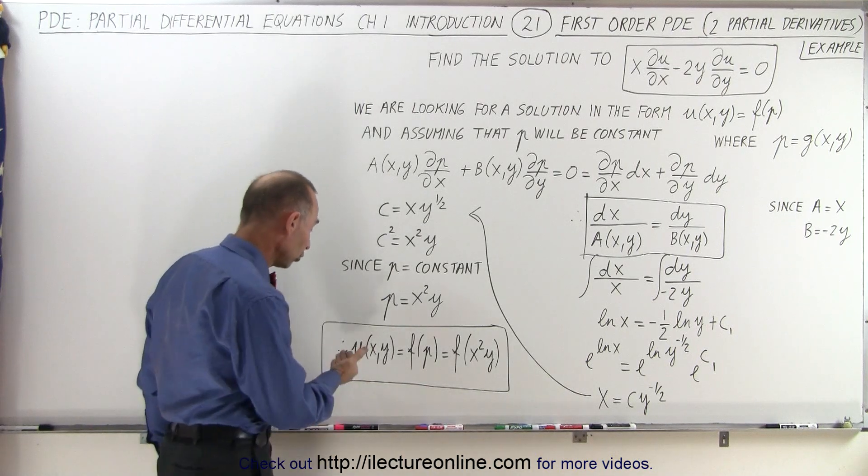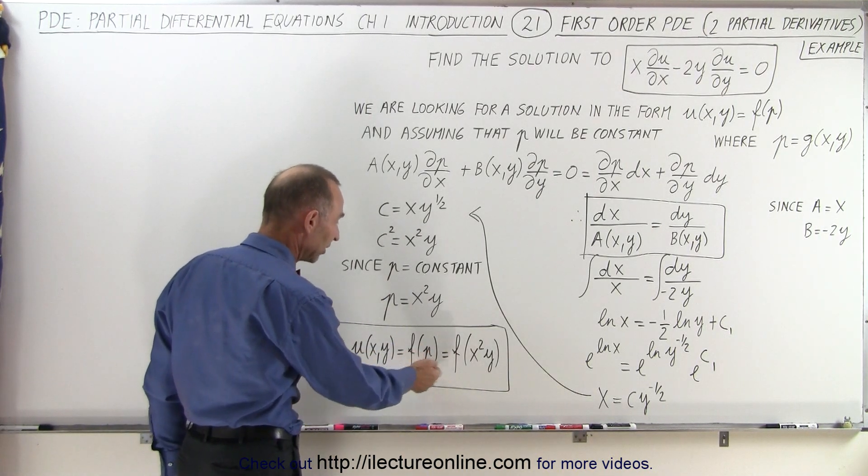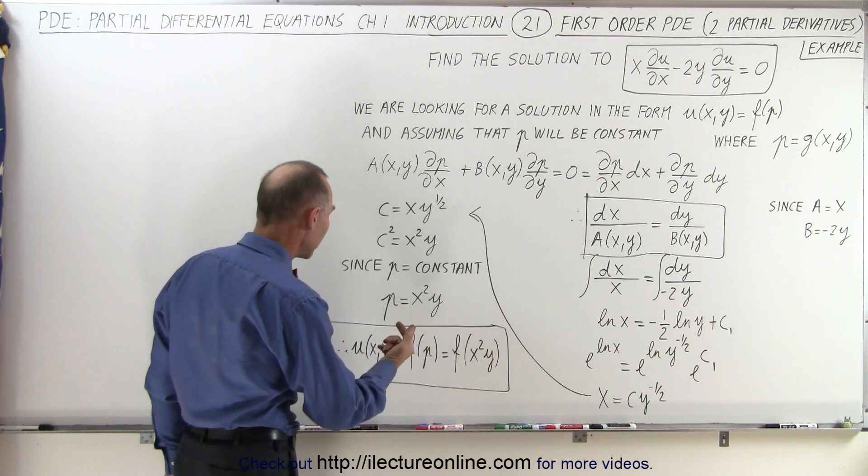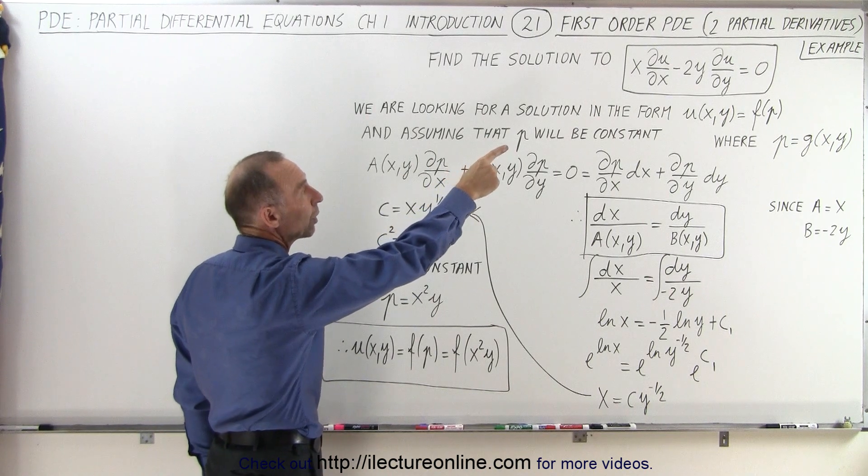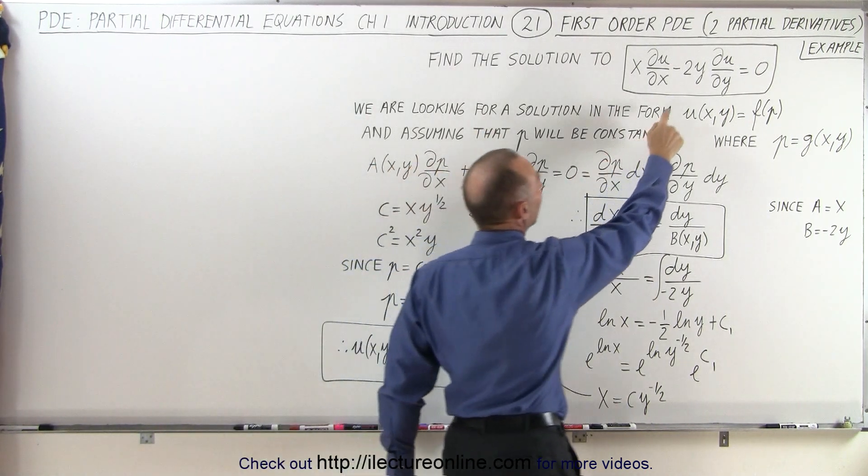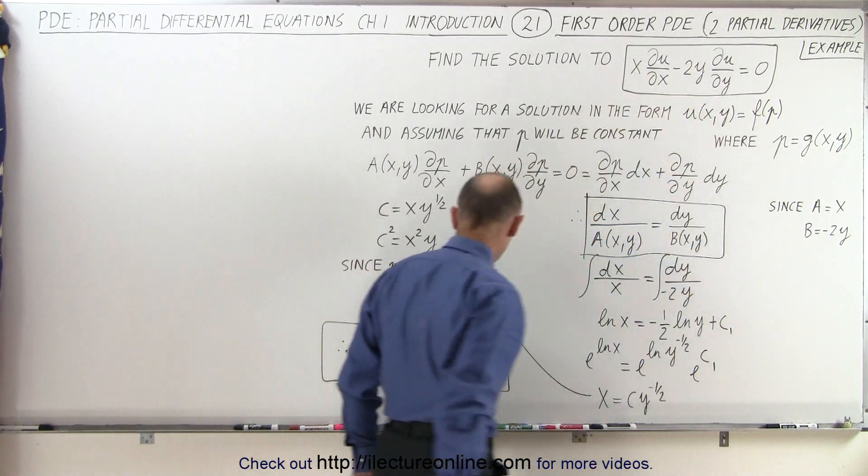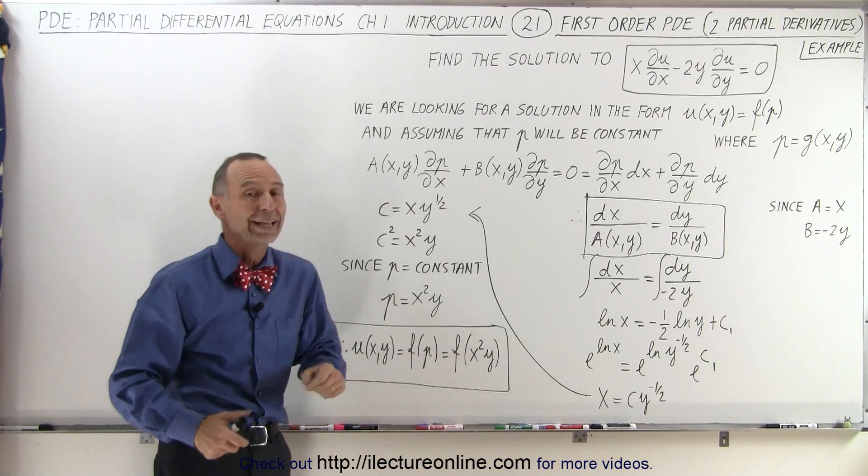And since we're looking for a solution where u is a function of p and in this case the function of p is equal to x squared y, we can say that the solution for the partial differential equation where c and r are equal to 0 and a is equal to x and b is equal to minus 2y, we can then see that the solution can be written as a function of x squared y.